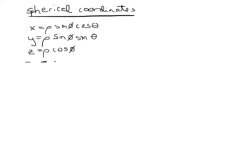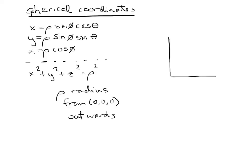And another useful equation in spherical coordinates is that x squared plus y squared plus z squared is always equal to rho squared. So rho in this case is a radius, but it's a radius from zero, zero, zero - a three-dimensional radius outwards. So R in the other coordinate systems was only on the xy plane. In spherical coordinates, rho is everywhere.